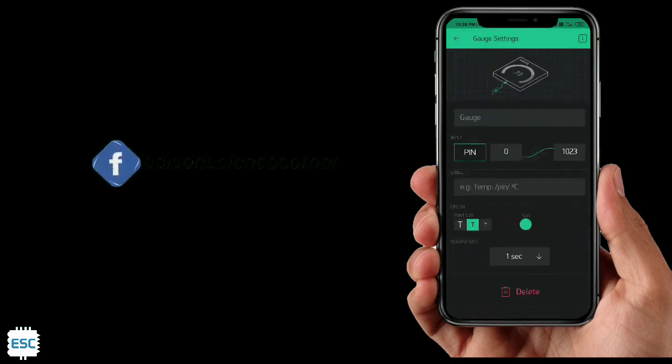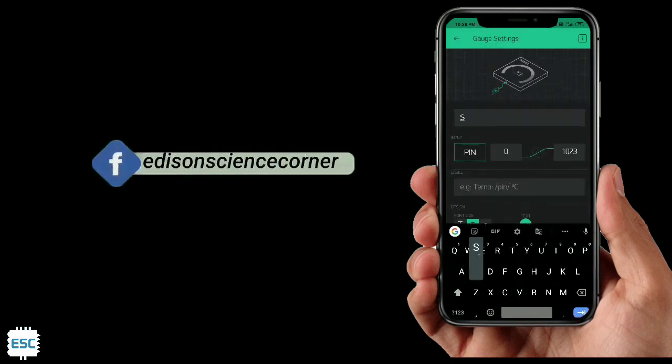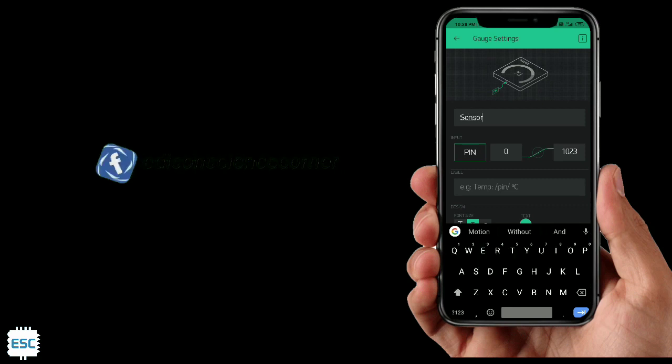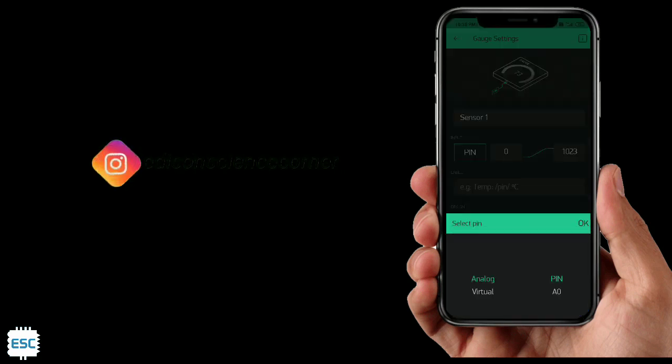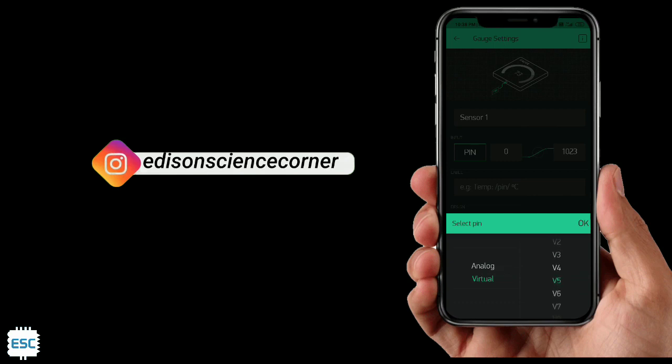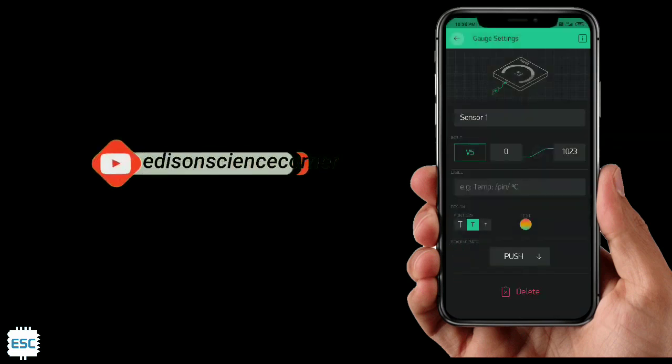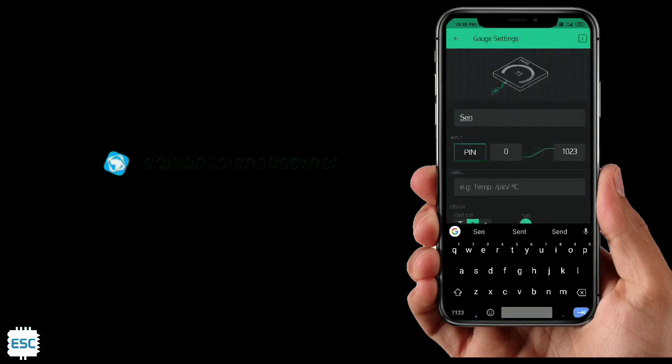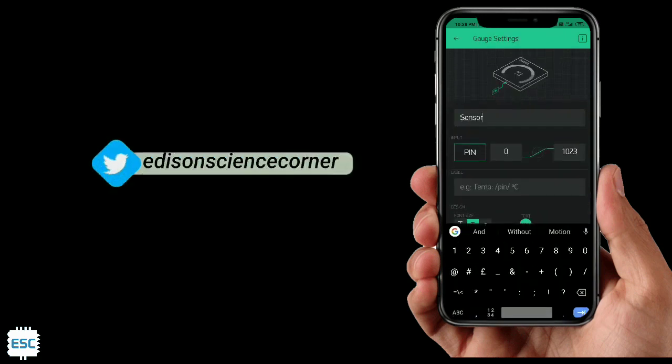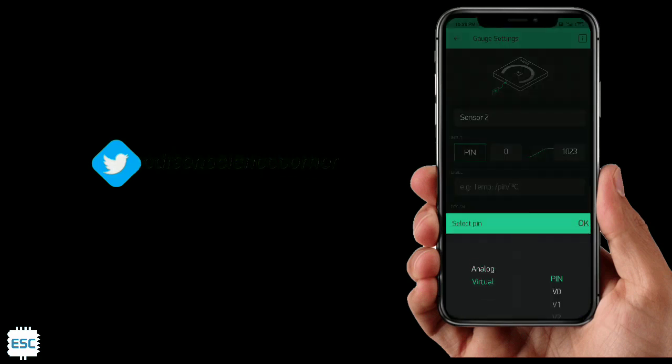Then select gauge button and give name and also select virtual pins. For the first sensor I selected V5. And do the same for second. Give name and also select V6 for second pin. That's all about Blynk app setup.